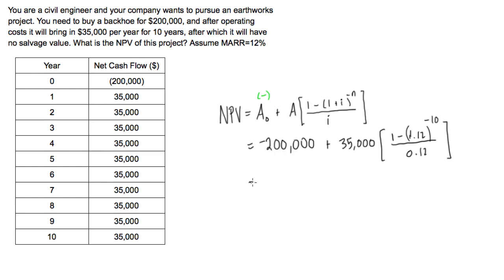Okay, so if you punch this in your calculator, we're going to get our net present value. Our net present value is equal to negative 200,000 plus—and this term actually works out to be $197,757.81.